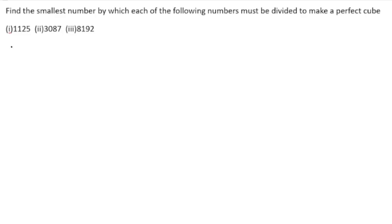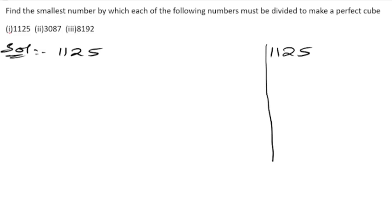Let us take the first part. The given number is 1125. First, we will find out its prime factors. Since the last digit is 5, but if we add the digits: 1 + 1 + 2 + 2 + 5 = 9, which is 9, so we can start with 3.